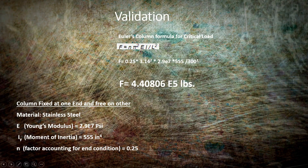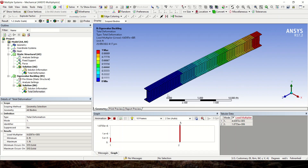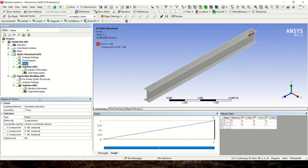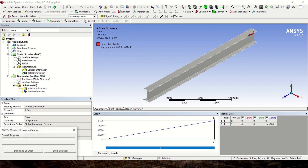For the hand calculations, n = 0.25, π = 3.14, E = 2.9 × 10^7, I = 555, and L = 300. Using Euler's formula, we get a critical buckling load of 4.408 × 10^5. This is very close to the ANSYS result of 4.6397 × 10^5, so the numerical results are acceptable.